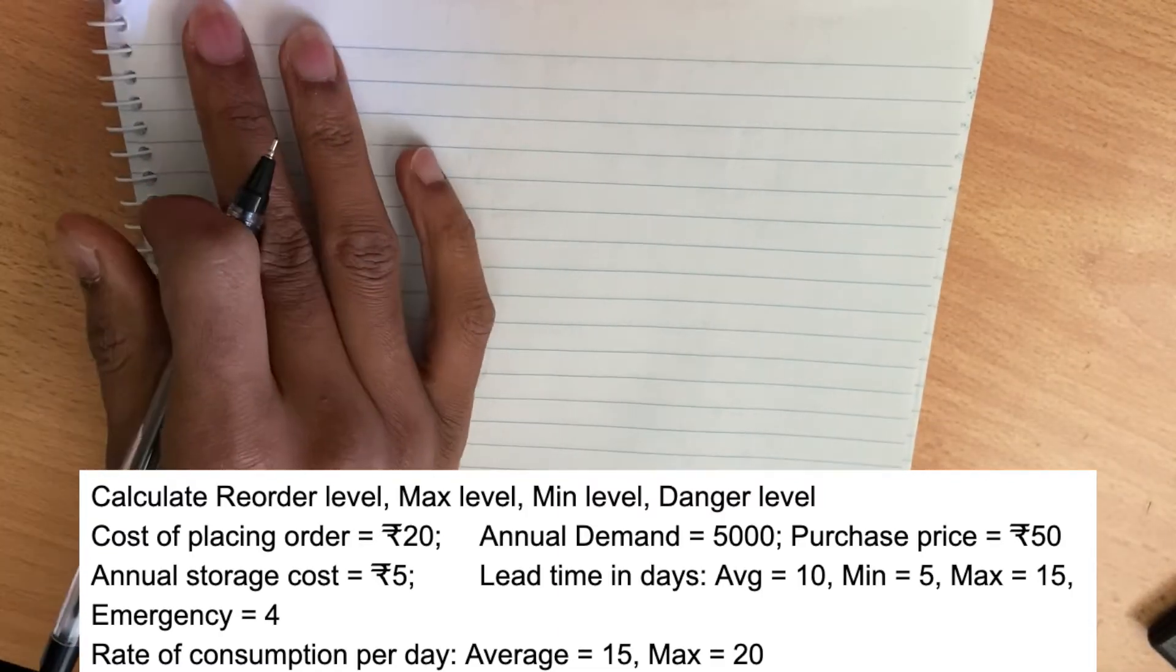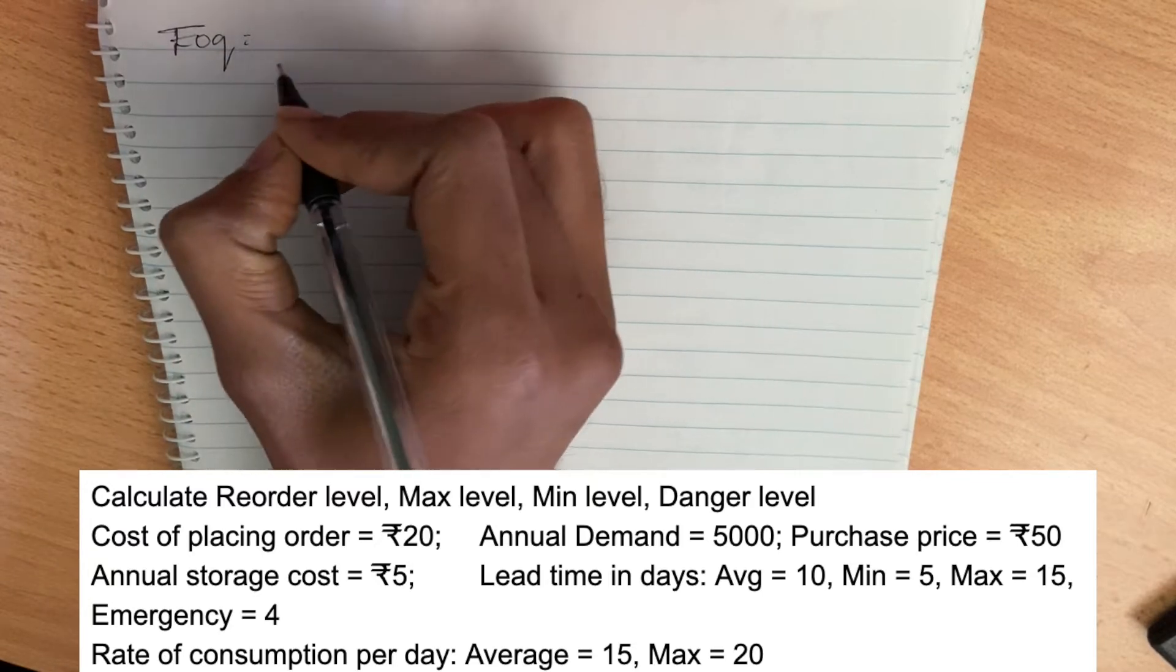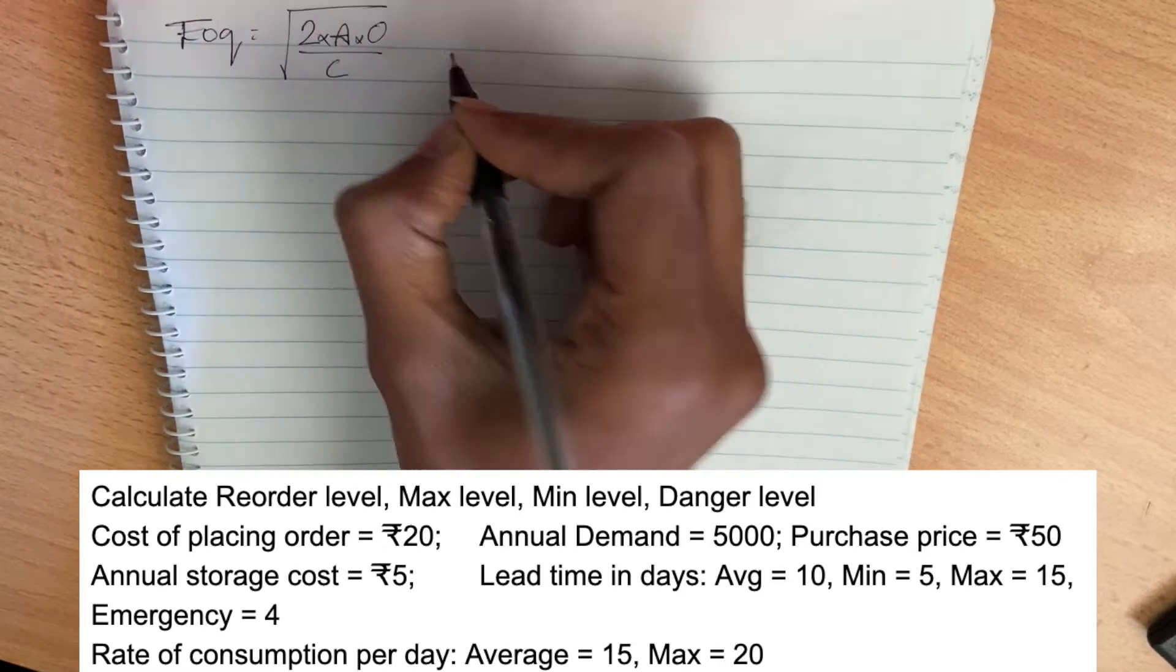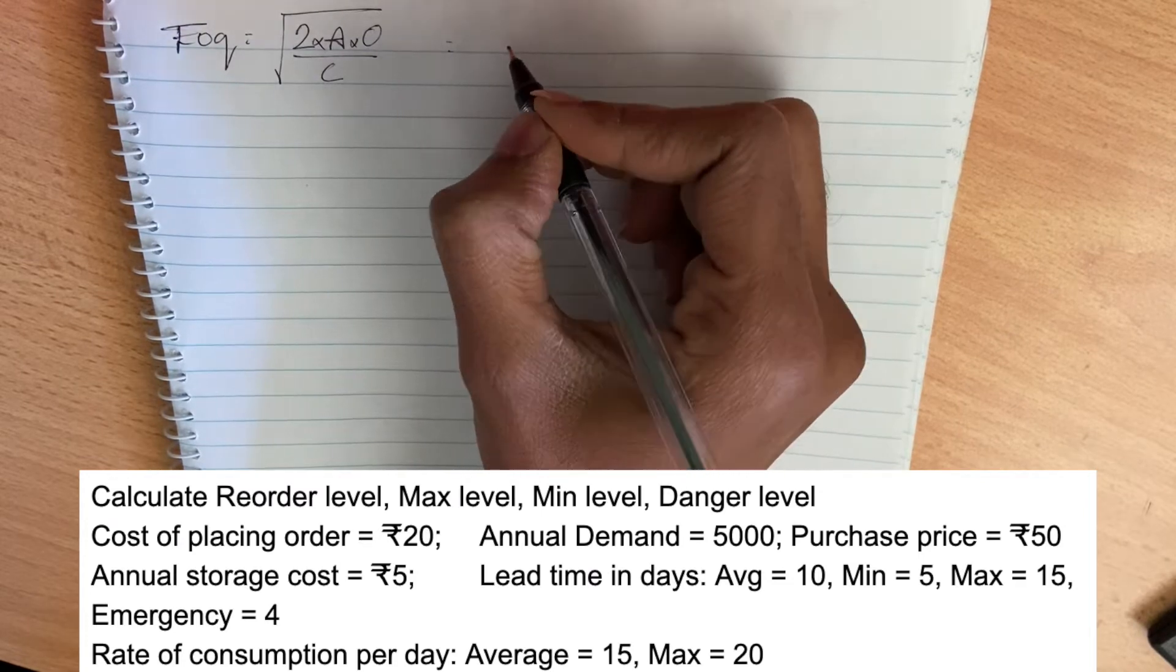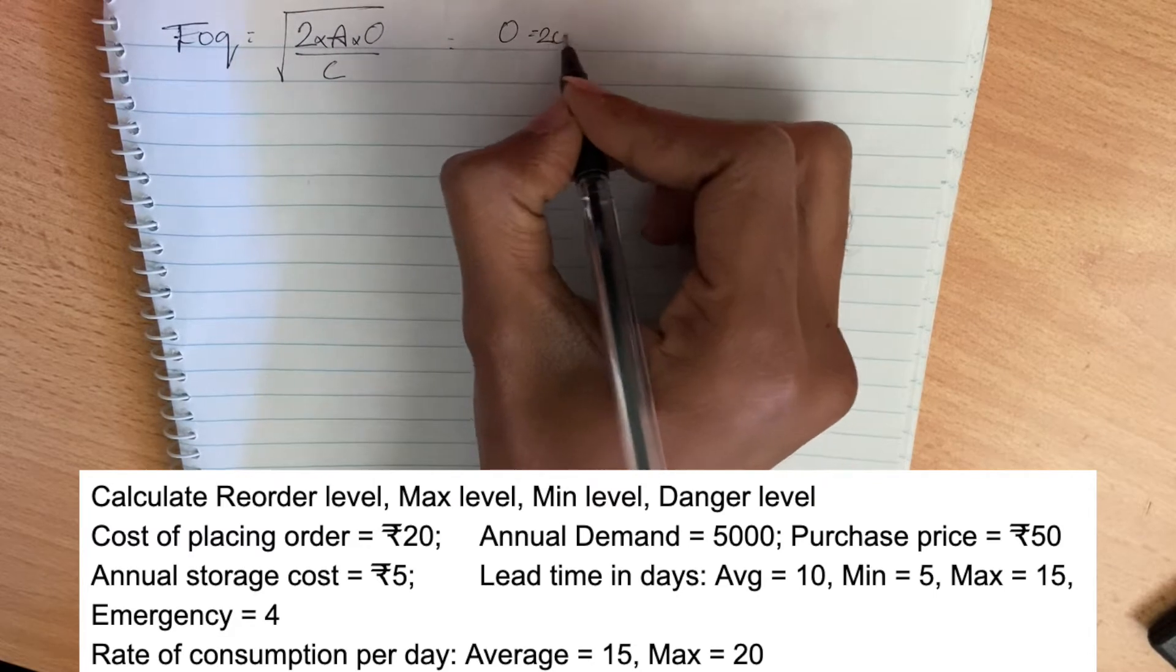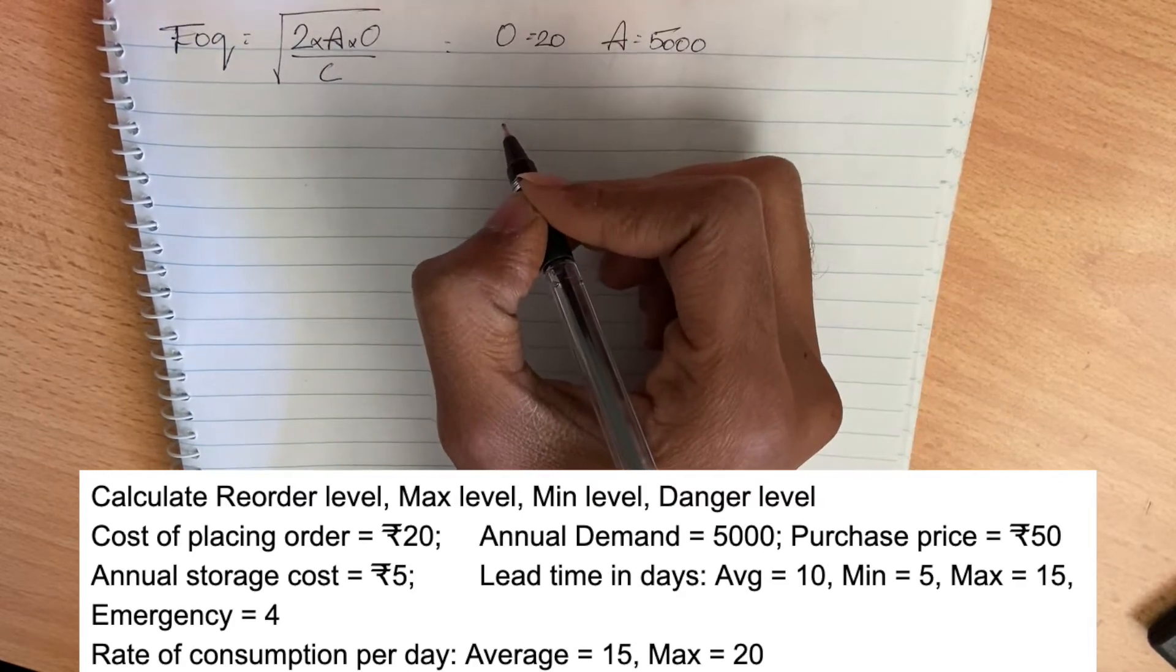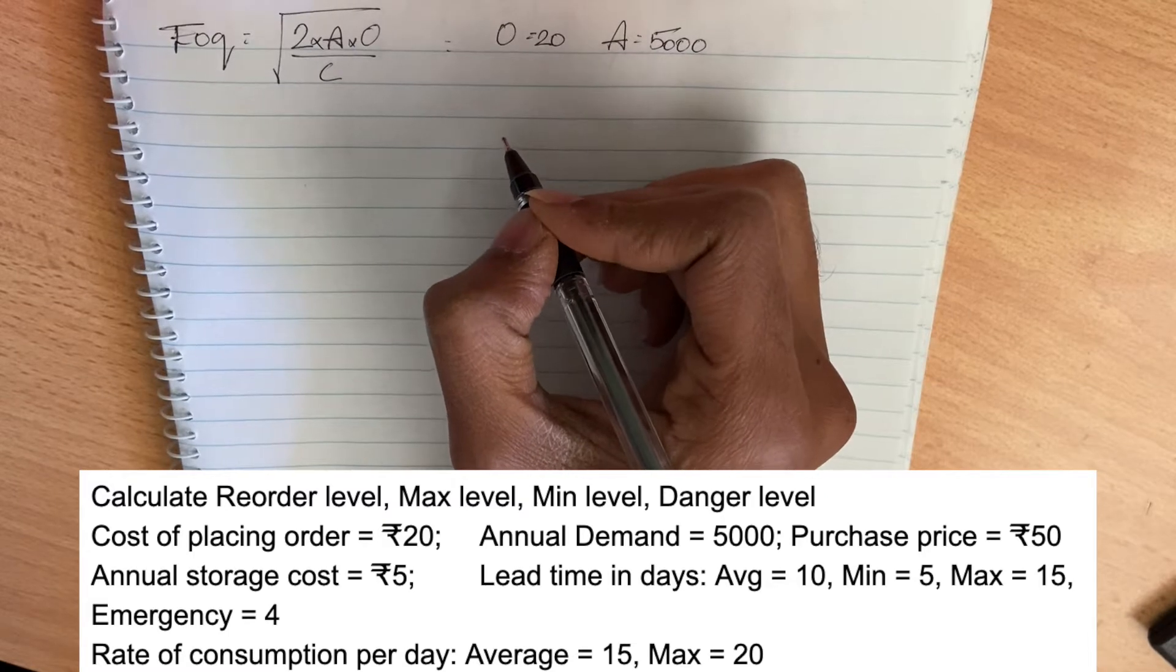First, we have reordering quantity, also known as economic ordering quantity. The formula is square root of 2 into annual demand into ordering cost divided by carrying cost. The cost of placing a purchase order is the ordering cost, so that is equal to 20. That is the number of units to be purchased, the annual demand is 5000. Last, carrying cost is the cost of storage per unit, so that is 5.